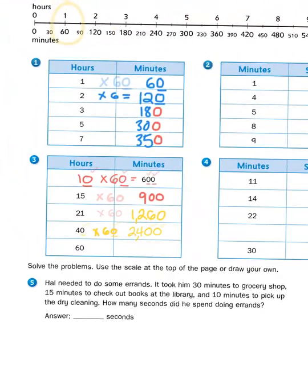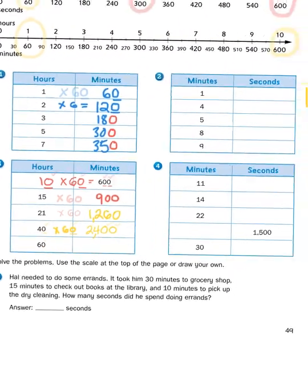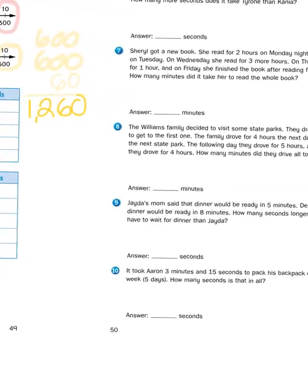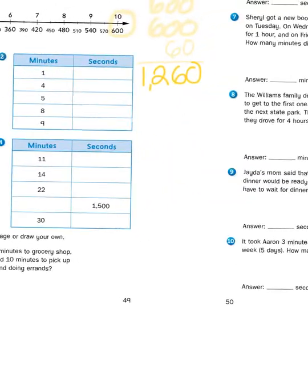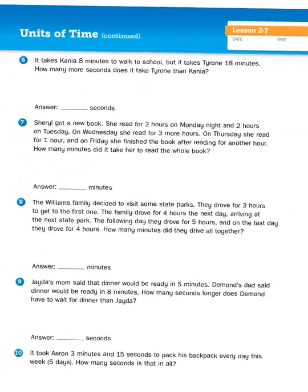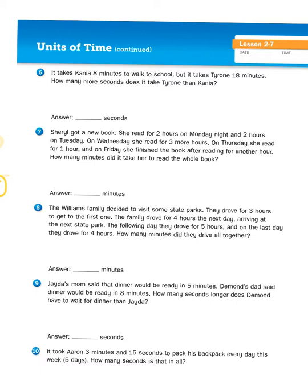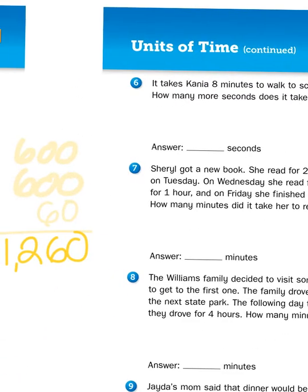Now let's take a look at some of the story problems that they have us doing on page 50. There's actually one down at the bottom of page 49, but let's look at number 6 at the top of page 50. It takes Kanya 8 minutes to walk to school but it takes Tyrone 18 minutes. How many more seconds does it take Tyrone than Kanya?